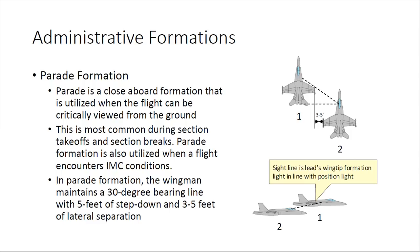But we also use it for practical purposes. We use it during section takeoffs and section breaks into the landing pattern, both at the boat and at the beach. We also use it when flying in instrument meteorological conditions. In parade formation, the wingman maintains a 30 degree bearing line with five feet of step down and three to five feet of lateral separation. The sight line for the wingman is putting the lead's wingtip formation light in line with the lead's position light. If lead's carrying a sidewinder, put the front fin of the lead's sidewinder in line with the stars and bars symbol on lead's fuselage.